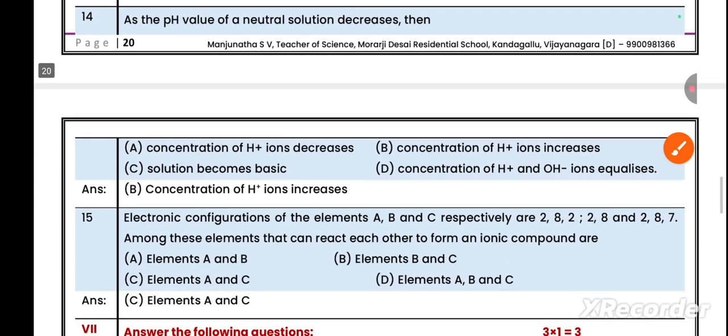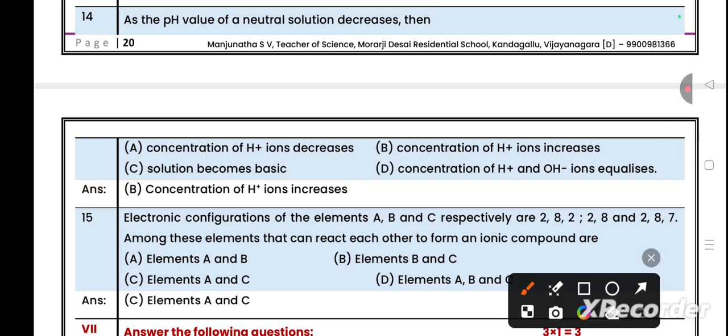Question number 14: As the pH value of a neutral solution decreases, then the concentration of hydrogen ions decreases, the concentration of hydrogen ions increases, solution becomes basic, or concentration of hydrogen and hydroxide ions equalizes. The right answer is: pH value of neutral solution decreases means it turns into acidic. If it turns into acidic, the concentration of hydrogen ions increases.